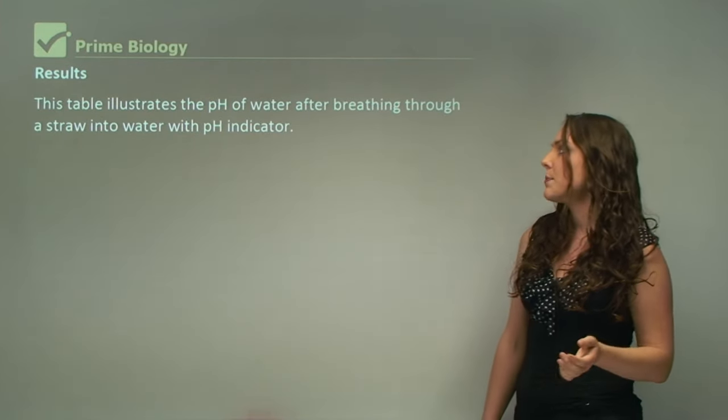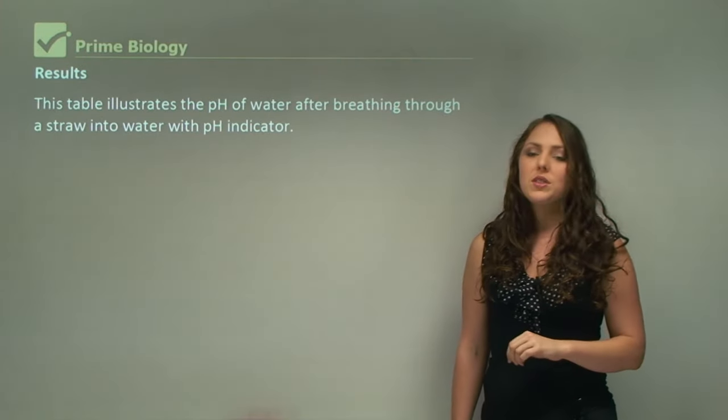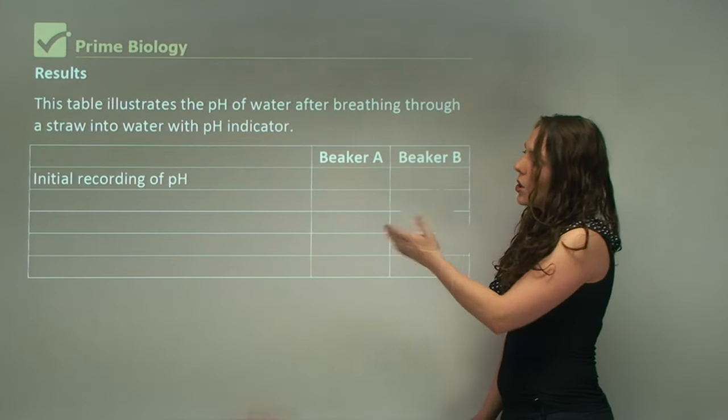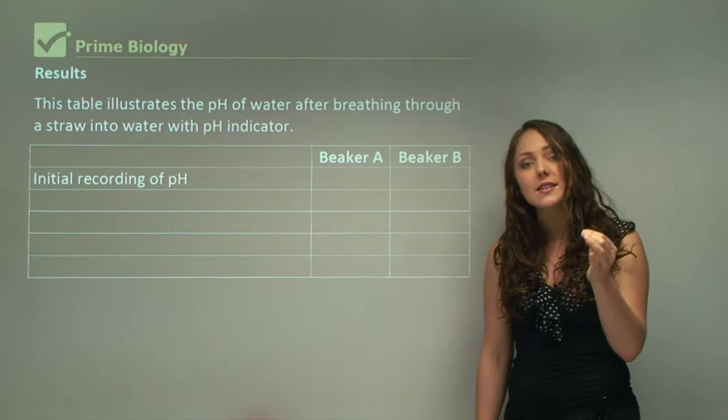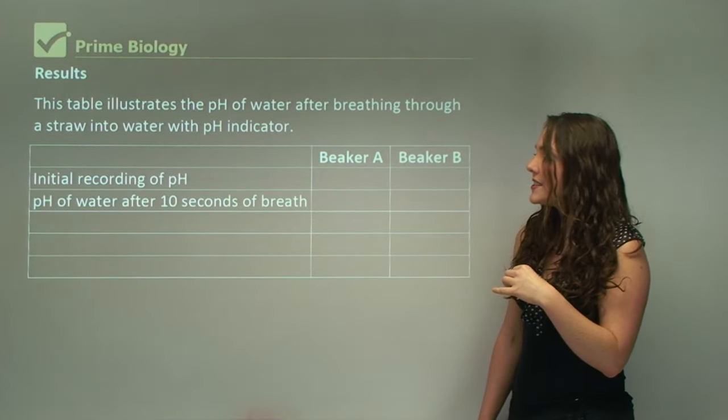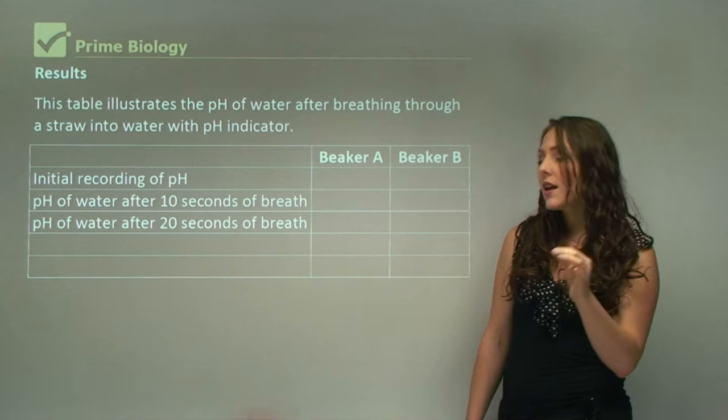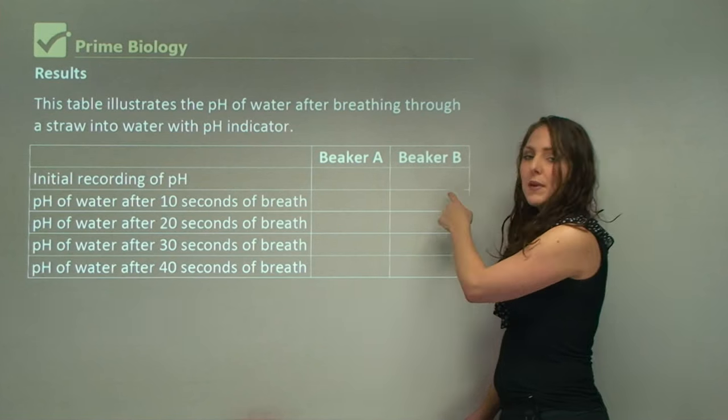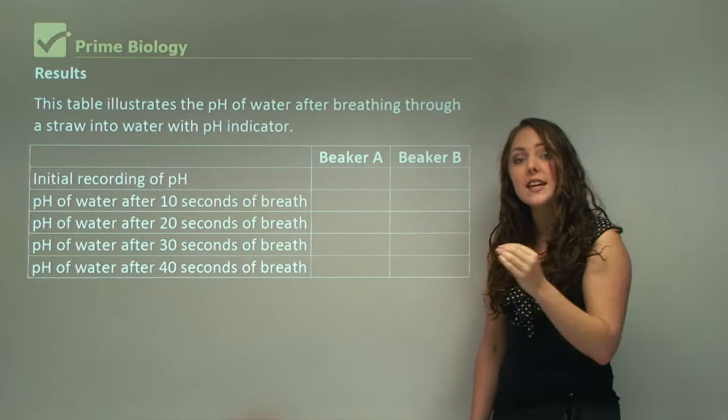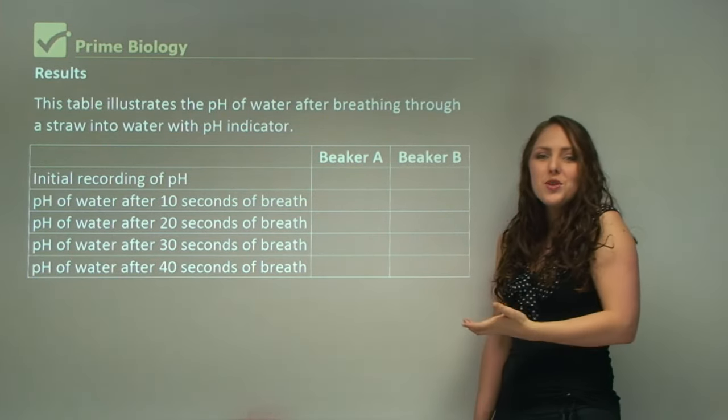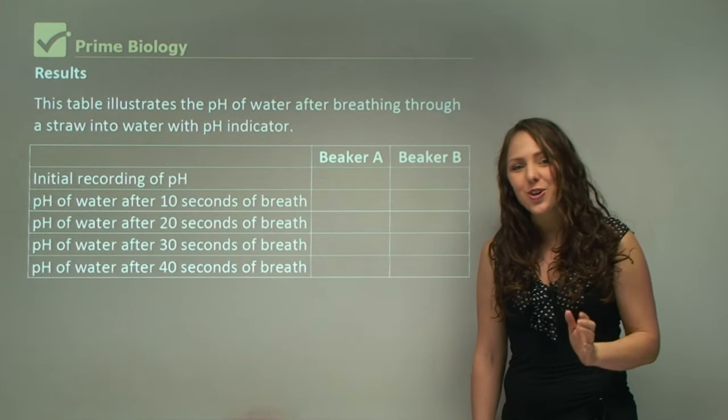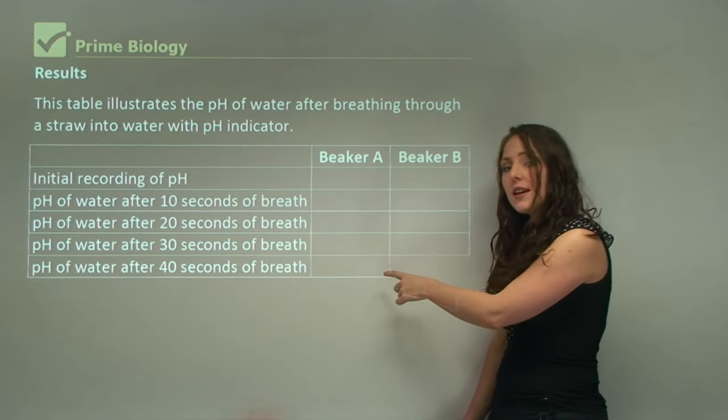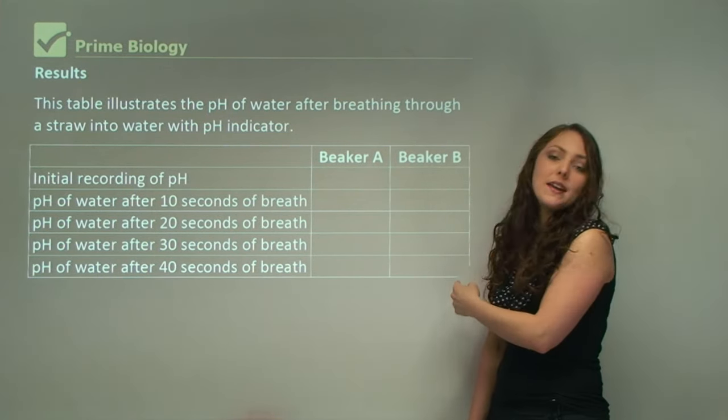This table illustrates the pH of water after breathing through a straw into water with a pH indicator. This is what your table is going to look like. We've got beaker A, beaker B. Initial recording of pH, pH of water after 10 seconds, after 20, after 30, and after 40 seconds of breath. Beaker A we're breathing into, and beaker B we're leaving alone. Why do we have beaker B if we're leaving it alone? Because that is our control. We need a control to show that when we're breathing in beaker A and it's changing, beaker B doesn't change.